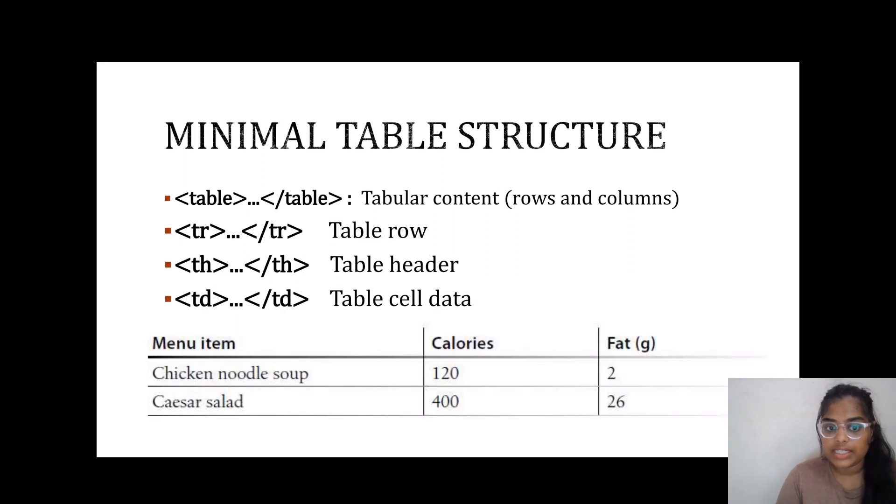TR gives the table row, which is used to mention a particular subject. TH is the table header when we have to name a particular heading of a table. TD is the data, which is known as the cell, where we give the data into each cell.